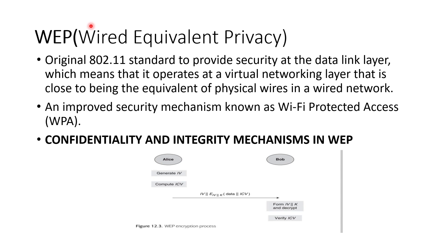To fulfill those requirements, we use Wired Equivalent Privacy (WEP). It is one of the standards — originally the 802.11 standard — used to provide security at the data link layer, which means it operates at the virtual networking layer, close to being the equivalent of physical wires in a wired network. An improved security mechanism is known as Wi-Fi Protected Access (WPA).